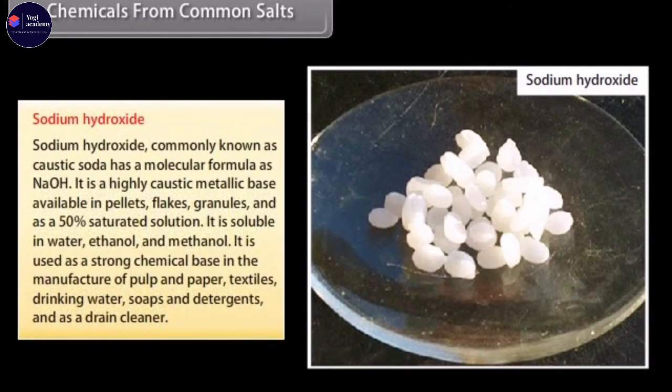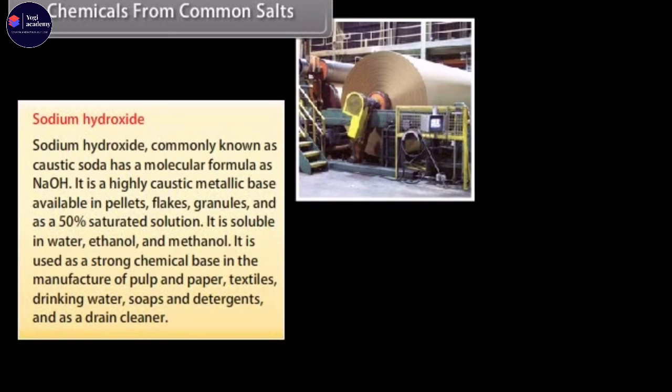Sodium hydroxide, commonly known as caustic soda, has a molecular formula as NaOH. It is a highly caustic metallic base available in pellets, flakes, granules and as a 50% saturated solution. It is soluble in water, ethanol and methanol. It is used as a strong chemical base in the manufacture of pulp and paper, textiles, drinking water, soaps and detergents and as a drain cleaner.